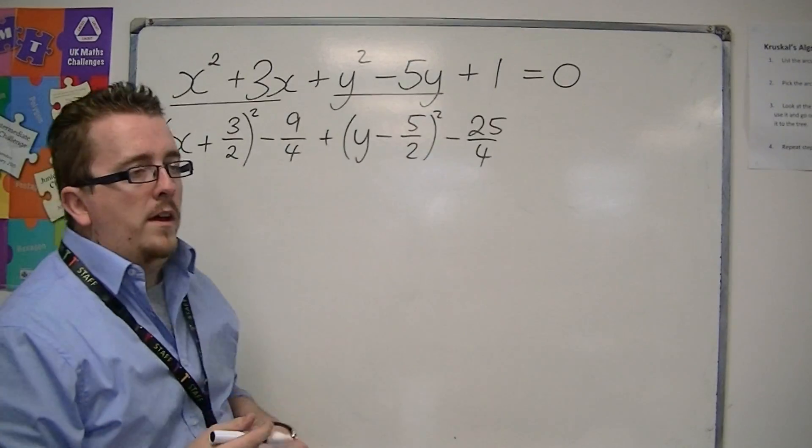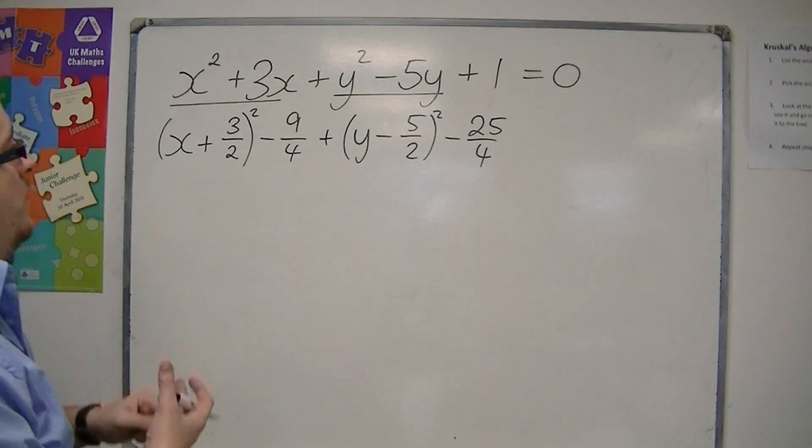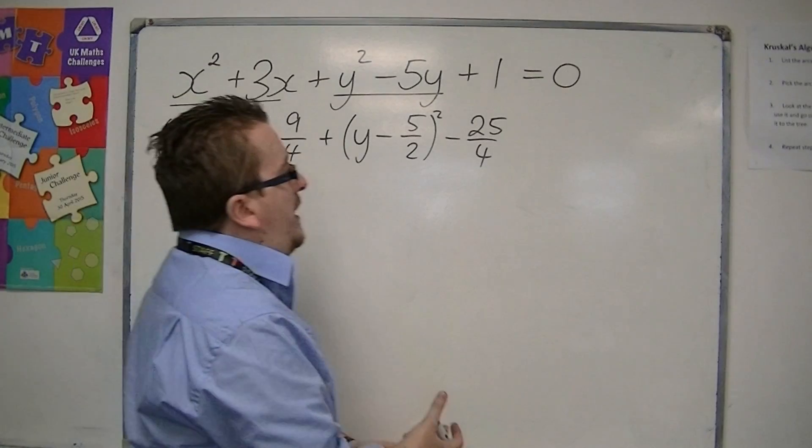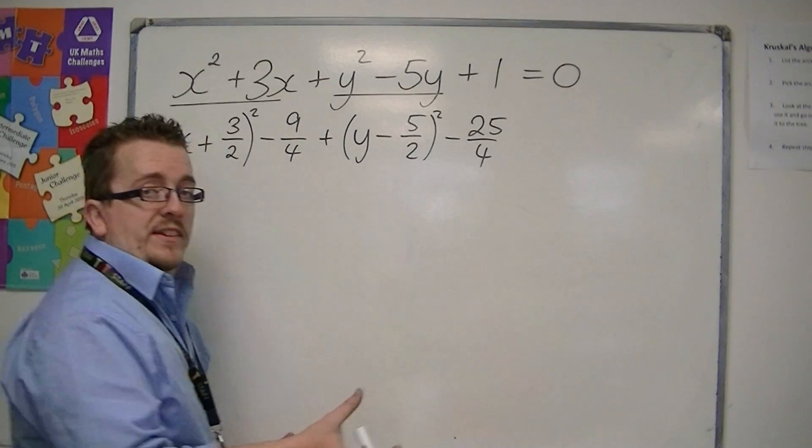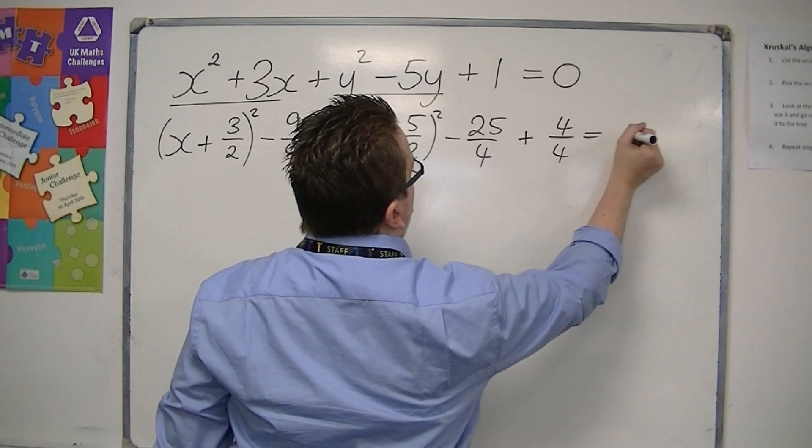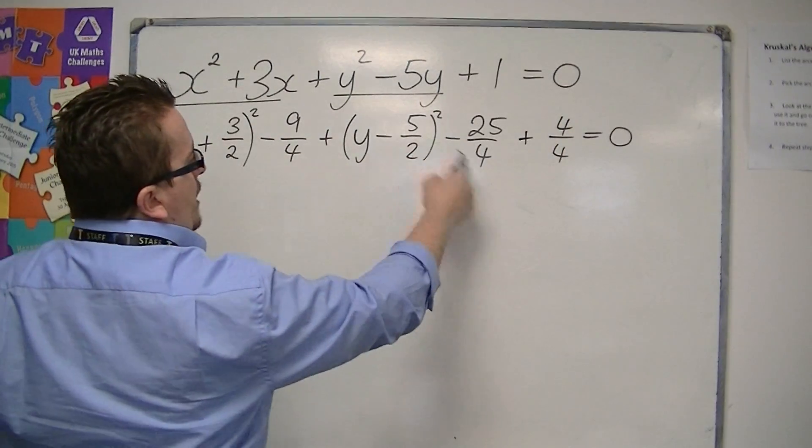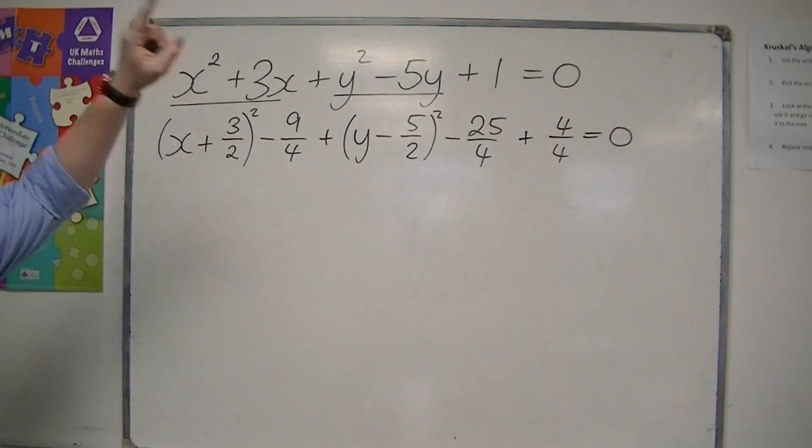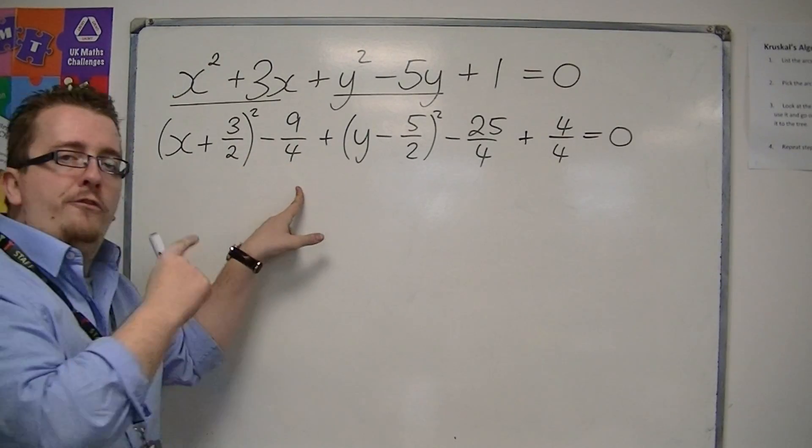And the plus 1, because I want to make sure that everything has the same denominator and it's easy to add together and combine, I'm going to write the 1 as 4 over 4. So I'm pre-empting that, because I know I've got a fraction with the denominator 4 there and a fraction with the denominator 4 there.